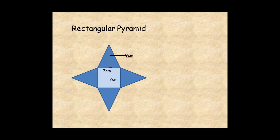The area of the base is 7 times 7 equals 49 square centimeters. Remembering that the area of a triangle is base times height divided by 2, each lateral face has area equal to 7 times 9 divided by 2, or 31.5 square centimeters.